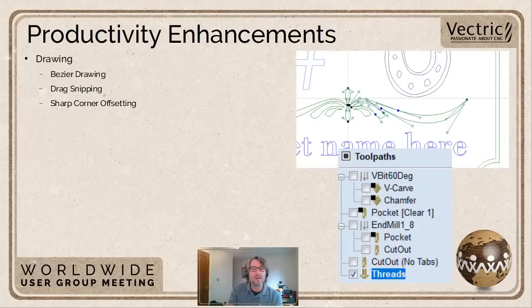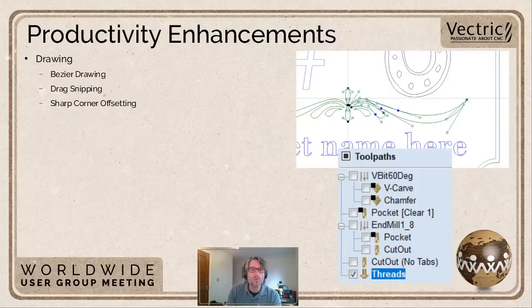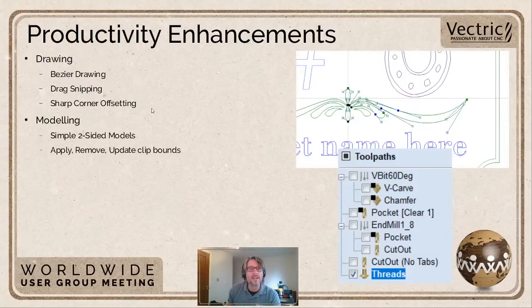We've also worked on our offsetting. The offsetting code underpins so much of what we do, and sharp corner offsetting is a very tricky problem. We've made significant changes to improve it. Most of you may never encounter issues with the existing one, but in very complex cases we can fail to get offsetting correct. We've addressed quite a few of those cases in this significant improvement.